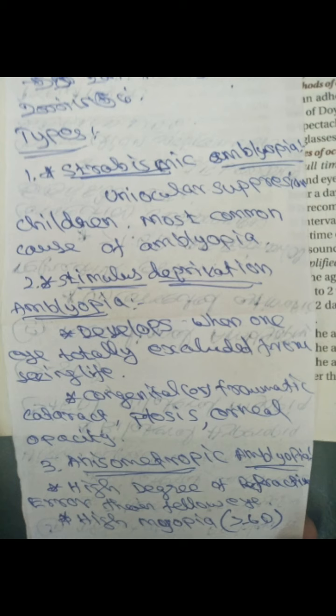Stimulus deprivation amblyopia. This is not a power issue. It can be a cataract — a congenital cataract or a traumatic cataract. It can be ptosis. There are 3 types, because the body is above the limbus. So we can see the visual axis on the light. There is no opacity; the lens is not transparent. There is a cataract. This is stimulus deprivation amblyopia.